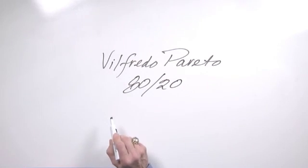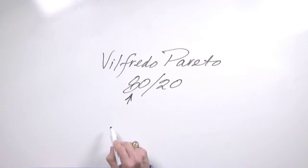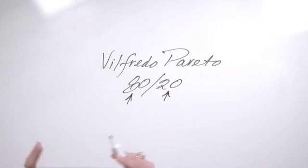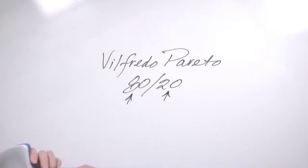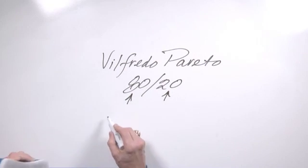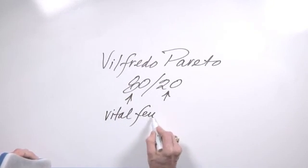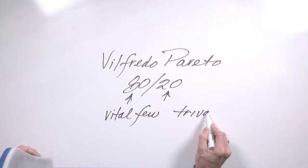When he looked at the economics of Italy, he discovered that 80 percent of the wealth of Italy was owned by 20 percent of the people. The Pareto concept was later turned into a Pareto chart, a diagram that shows you the vital few and separates those from the trivial many.